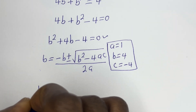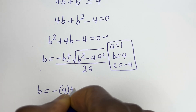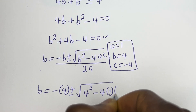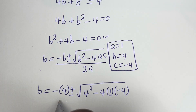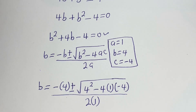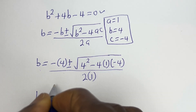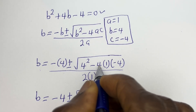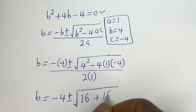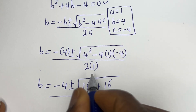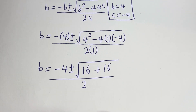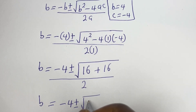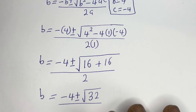Then we have b is equal to minus 4 plus or minus square root of 4 squared minus 4 multiplied by 1 multiplied by minus 4, over 2 multiplied by 1. That gives 16 minus 4 times 1 times minus 4, which is plus 16, everything over 2. So b is equal to minus 4 plus or minus square root of 32, over 2.